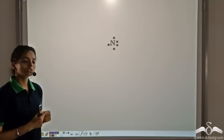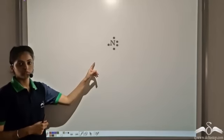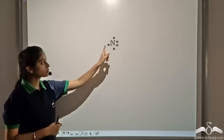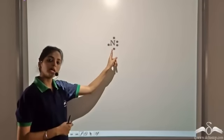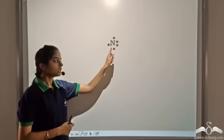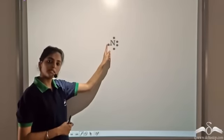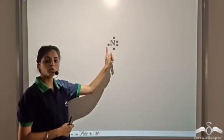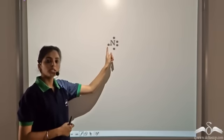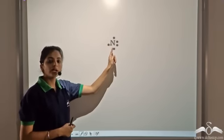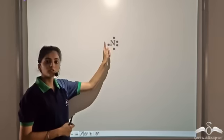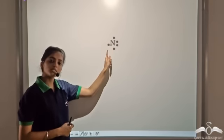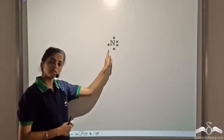Let's look at the atomic structure of nitrogen. Nitrogen has 5 electrons in the valence shell. When we show the electrons like this, it represents the number of electrons present in the valence shell of the atom. So nitrogen has 5 electrons in the valence shell.